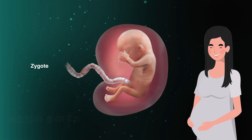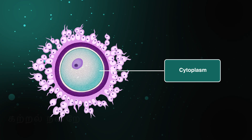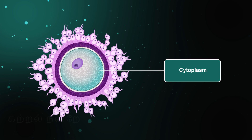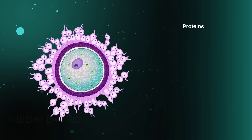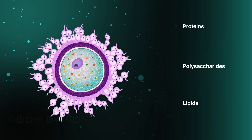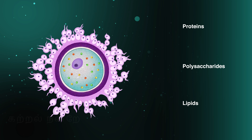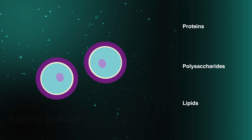In humans, the zygote develops inside the female body, so the ovum does not have a shell. The cytoplasm of the human ovum, known as ooplasm, is rich in nutrient reserves. It contains proteins, polysaccharides, and lipids, which are stored in the form of small granules. If the ovum is fertilized, these nutrients support the zygote for its next and the first stage of development — cleavage.